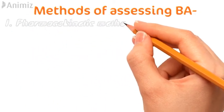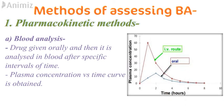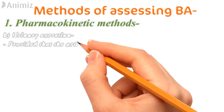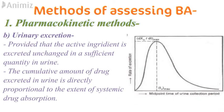In pharmacokinetic methods, for blood analysis, a drug is given orally and then analyzed in the blood after specific periods of time, and a plasma concentration vs. time graph is obtained. For urinary excretion data, the drug is given orally and analyzed in the urine after specific periods of time. The active ingredient must be excreted unchanged in sufficient amounts in the urine, and the cumulative data of drug excreted in urine is directly proportional to the extent of systemic absorption.